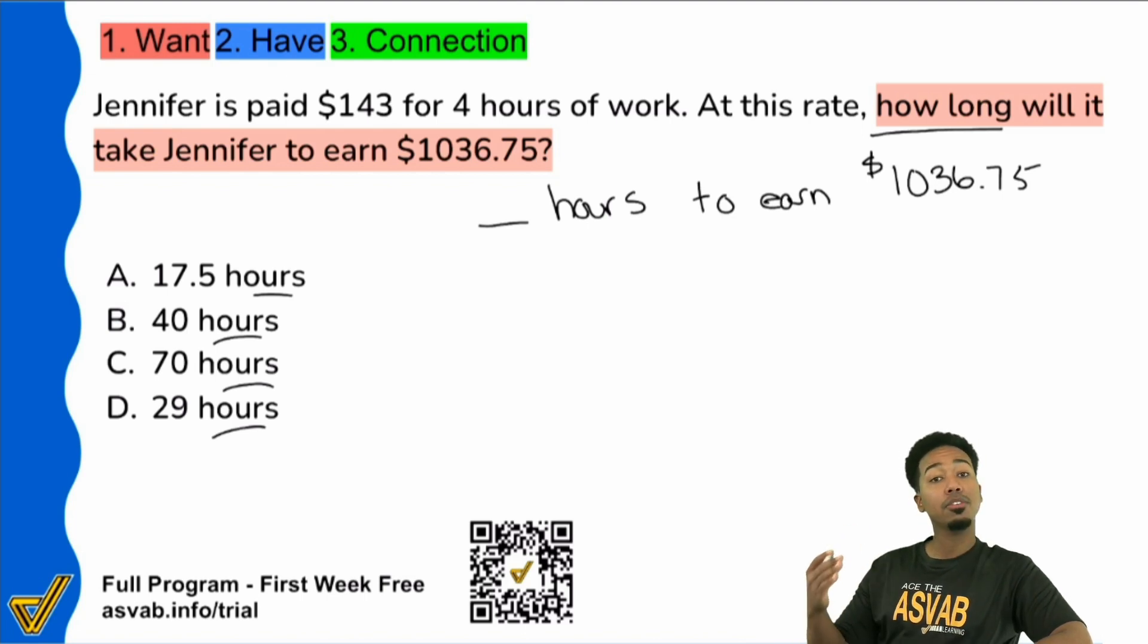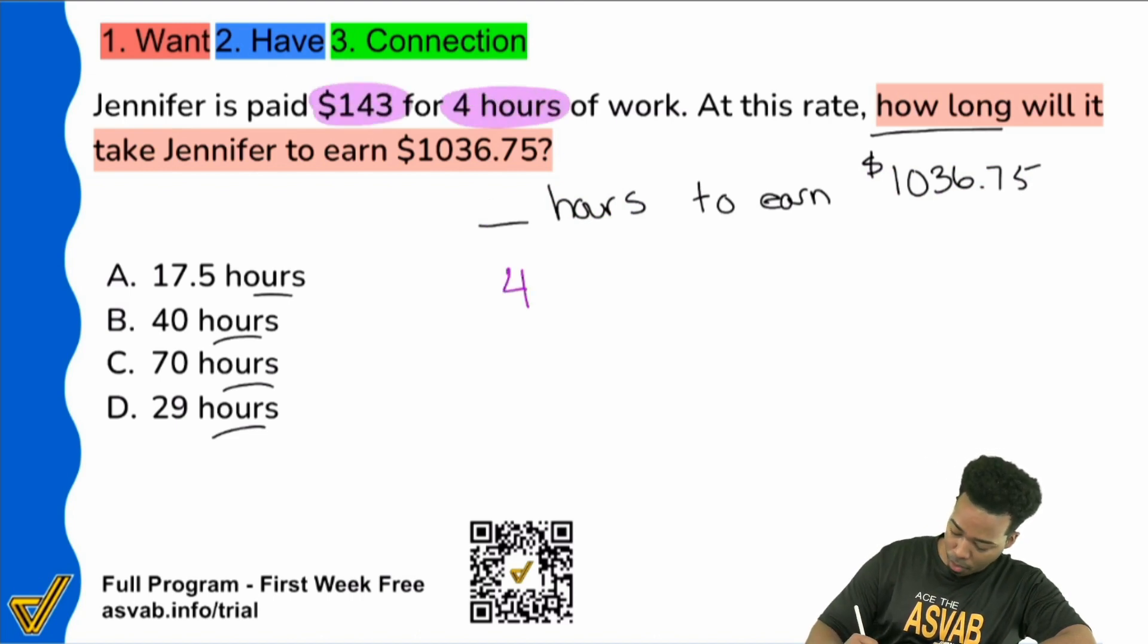And if you read the first sentence, if you've seen me do proportion word problems, you might see that we're comparing the same thing in the same way. We have hours and money here, hours and money. So we'll have four hours to earn $143.